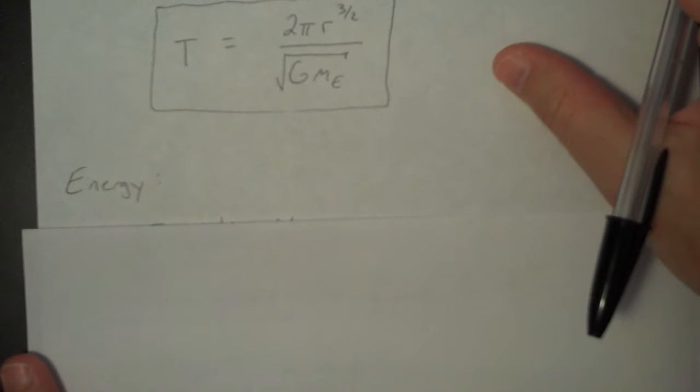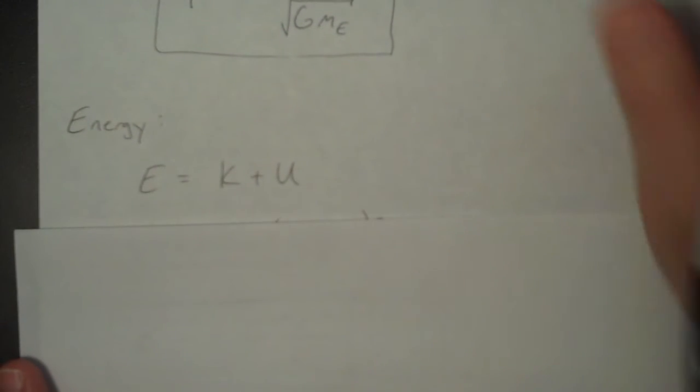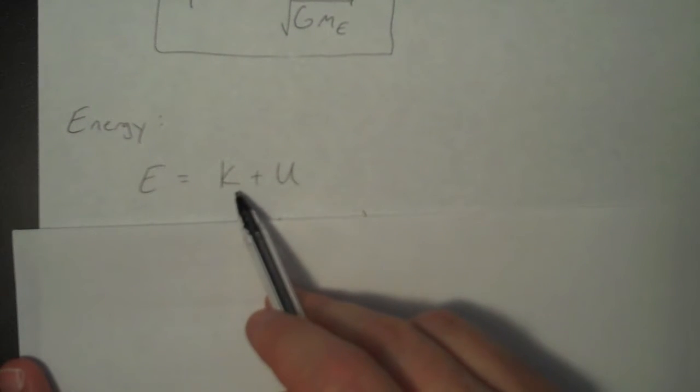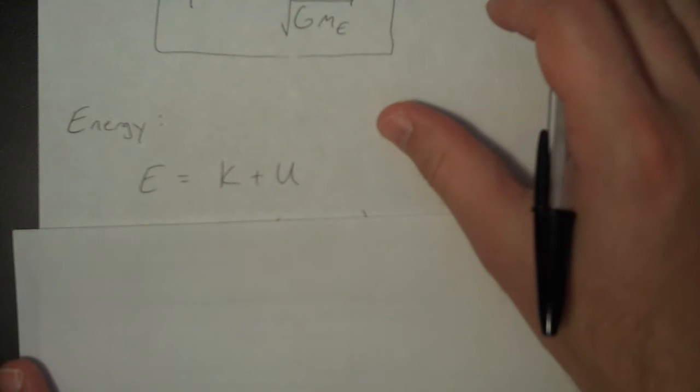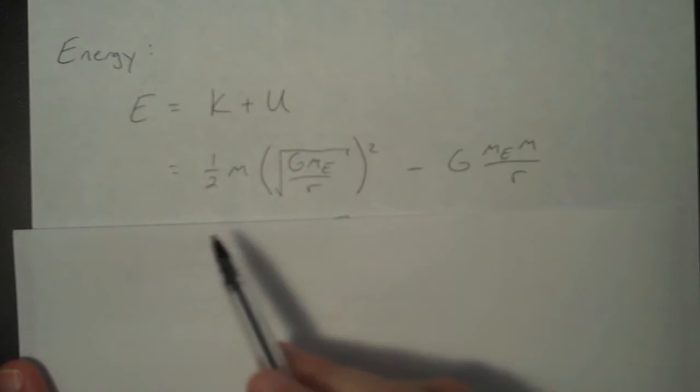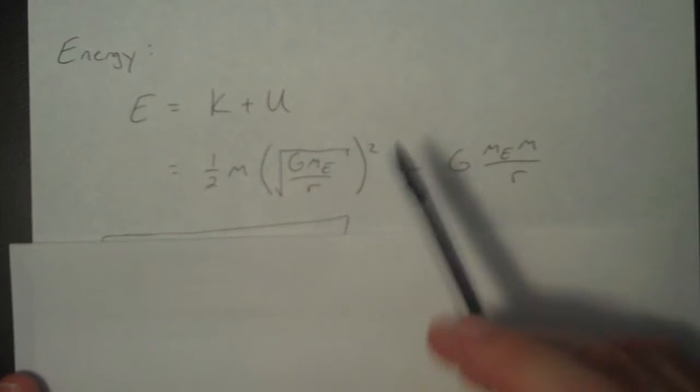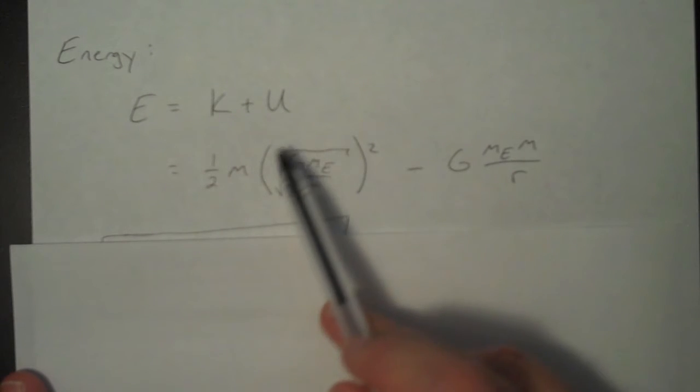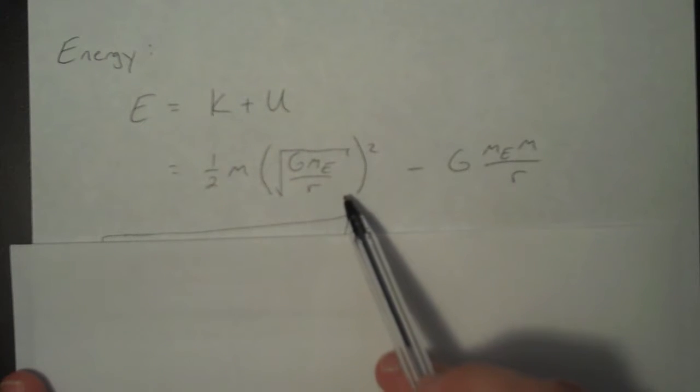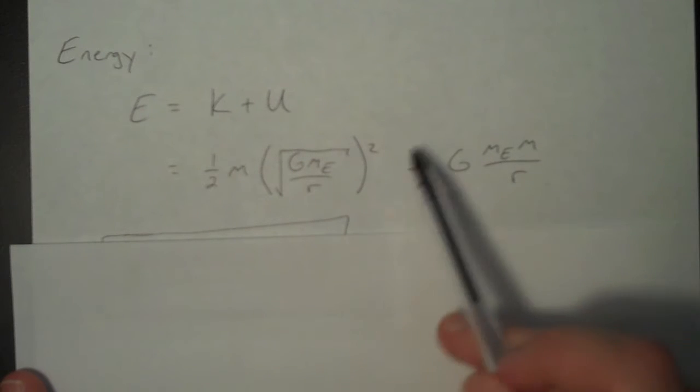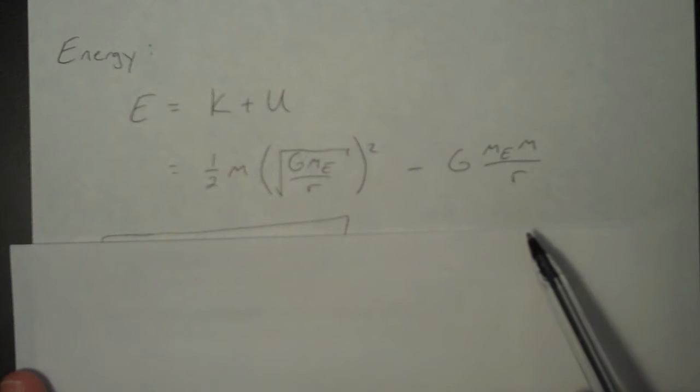And finally, let's look at the energy in a circular orbit. Total energy is kinetic energy plus potential energy. So your kinetic energy is, as always, one-half m v squared. But we're plugging in that value for v that we previously found. And then this is the potential energy of gravity that we looked at in the previous lesson.